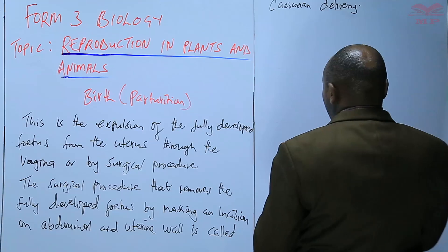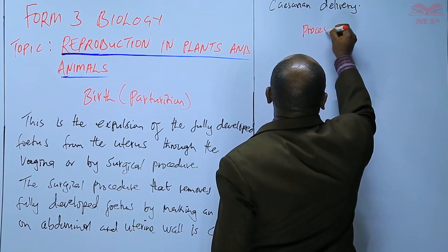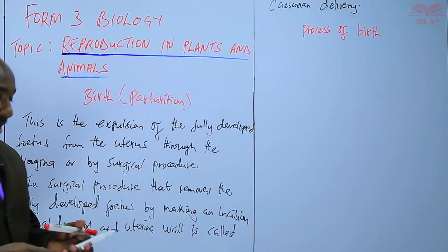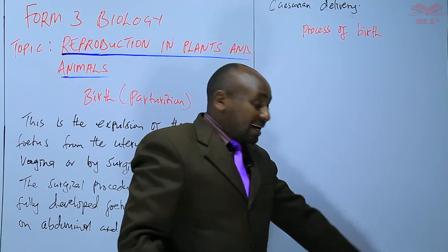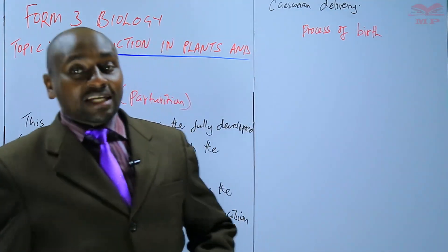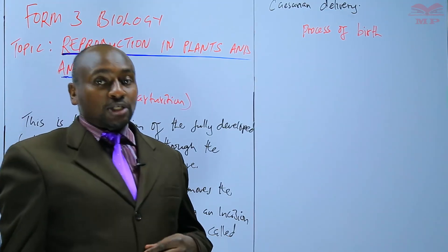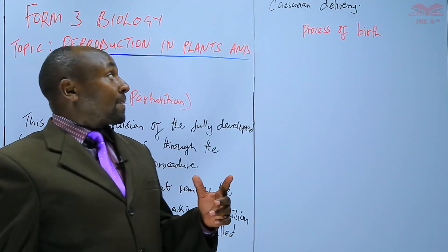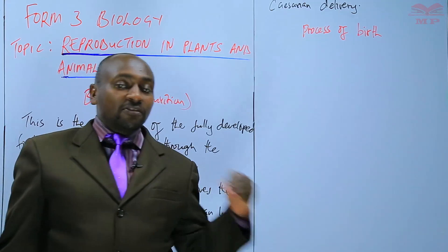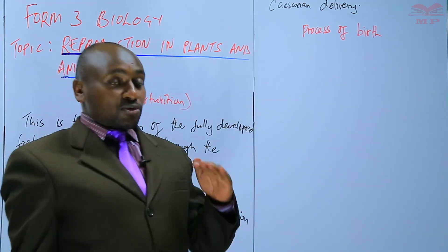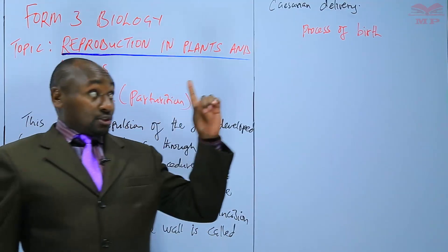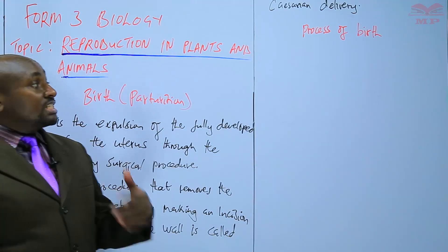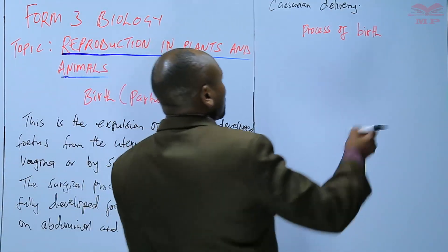So let's look at the process of birth. The process of birth is initiated by a certain hormone that is known as oxytocin. What oxytocin does is that it removes the inhibitory effect of progesterone. Progesterone is the hormone that maintains the pregnancy. So the moment the oxytocin is released, the level of progesterone is lowered and that is what initiates the process of birth.